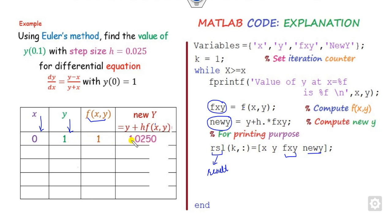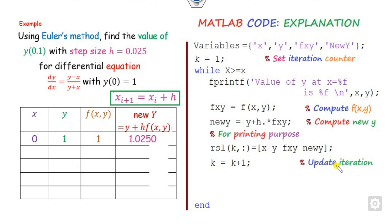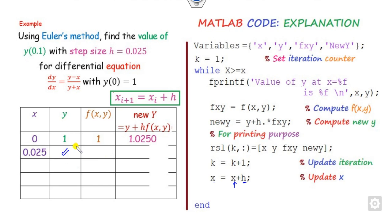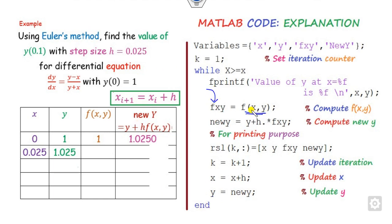Then update k = k + 1 for the next row. Update x by the rule x = x + h. Update y by setting y = new_y. The loop then goes back, recalculates f(x,y), computes the new y again, prints it, and k becomes 2 for the second row, and so on until the values at the desired capital X are completed.